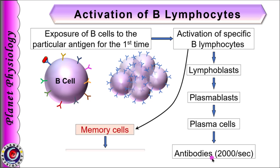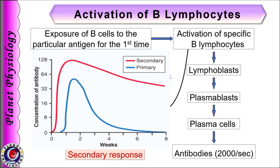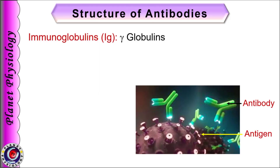Some of the activated B-cells give rise to memory B-cells which also circulate and then get lodged in various lymphoid organs. Memory cells get activated by the same antigen in future and offer a quick, stronger and long-lasting secondary response.